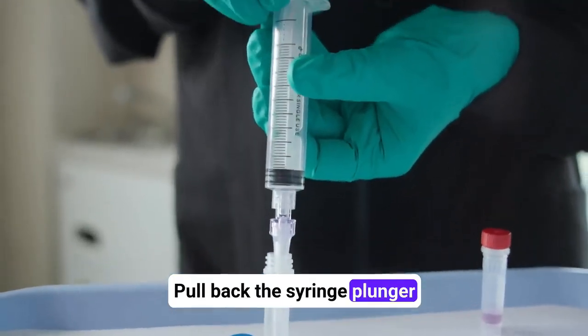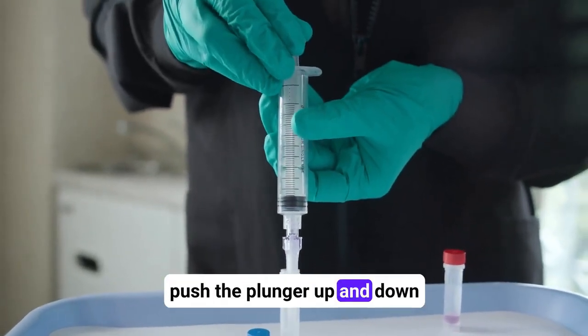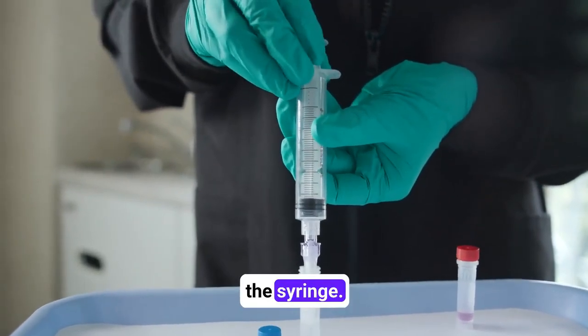Pull back the syringe plunger and draw in saline solution. Then, push the plunger up and down three times to ensure the saline has been mixed with the sample water droplets inside the syringe.